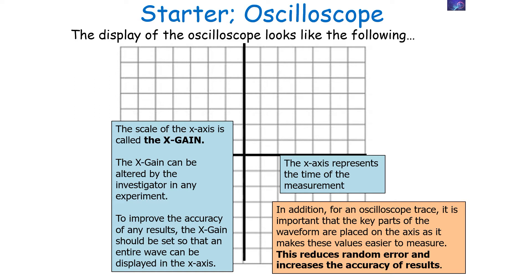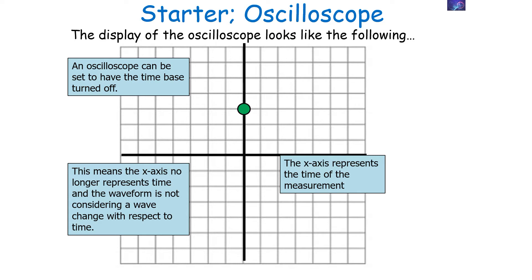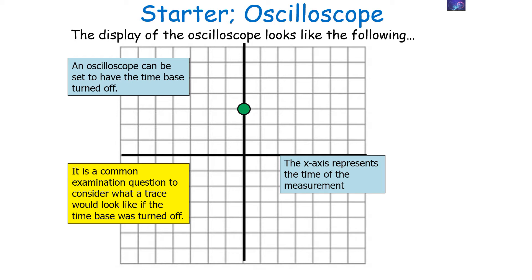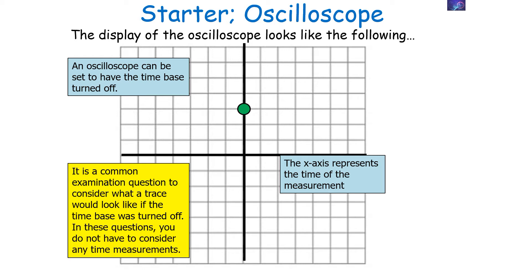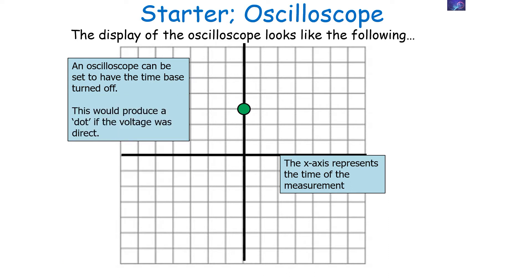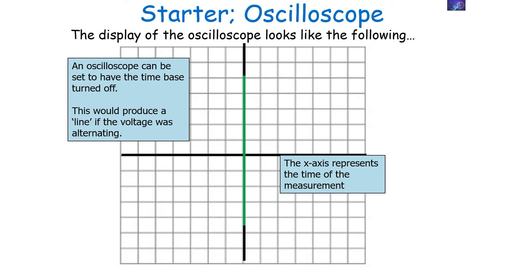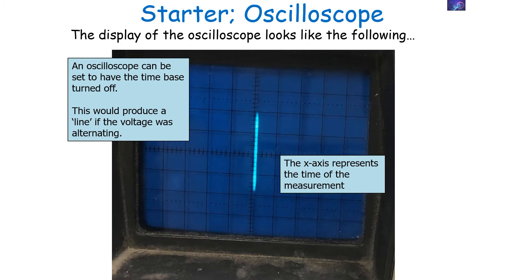For an oscilloscope trace, it's important that the key parts of the waveform are placed on the axis as it makes these values easier to measure, reducing random error and increasing accuracy. An oscilloscope can have its time base turned off, meaning the x-axis no longer represents time and the waveform is not considered as changing with respect to time — the wave will only be represented on the y-axis. This is a common examination question. If the time base is off, a direct voltage produces a dot and an alternating voltage produces a vertical line.